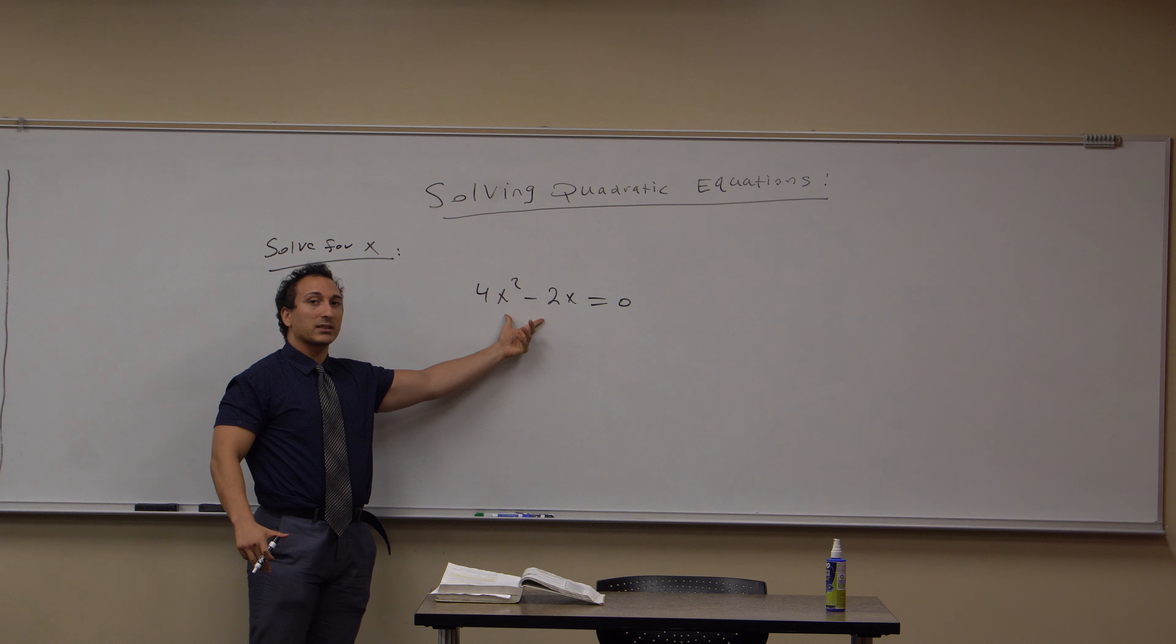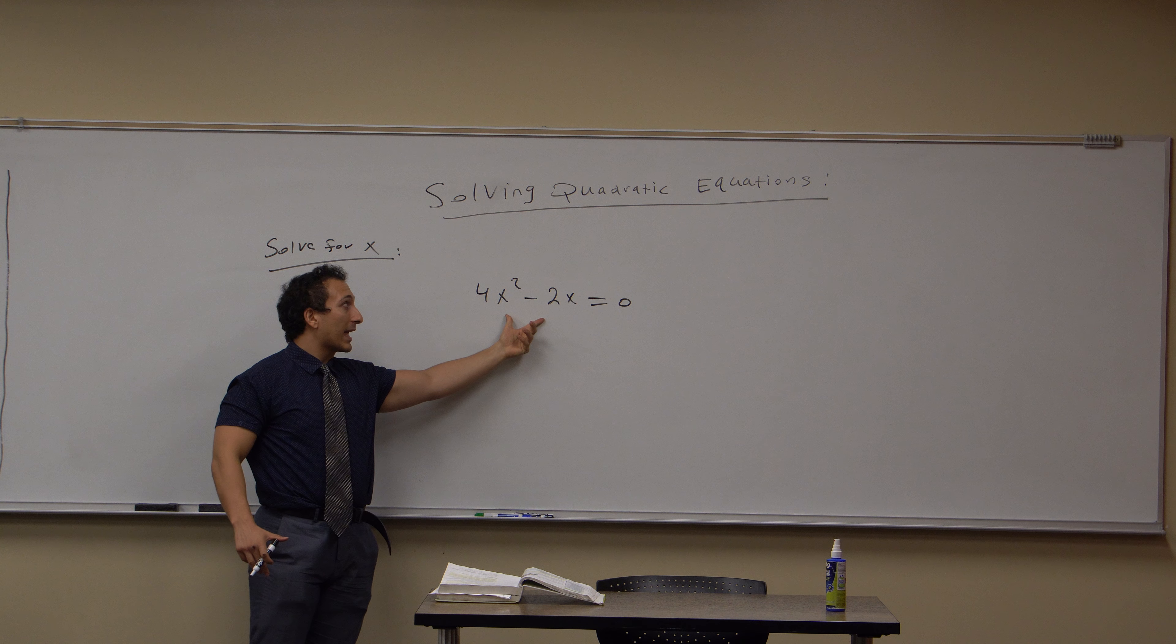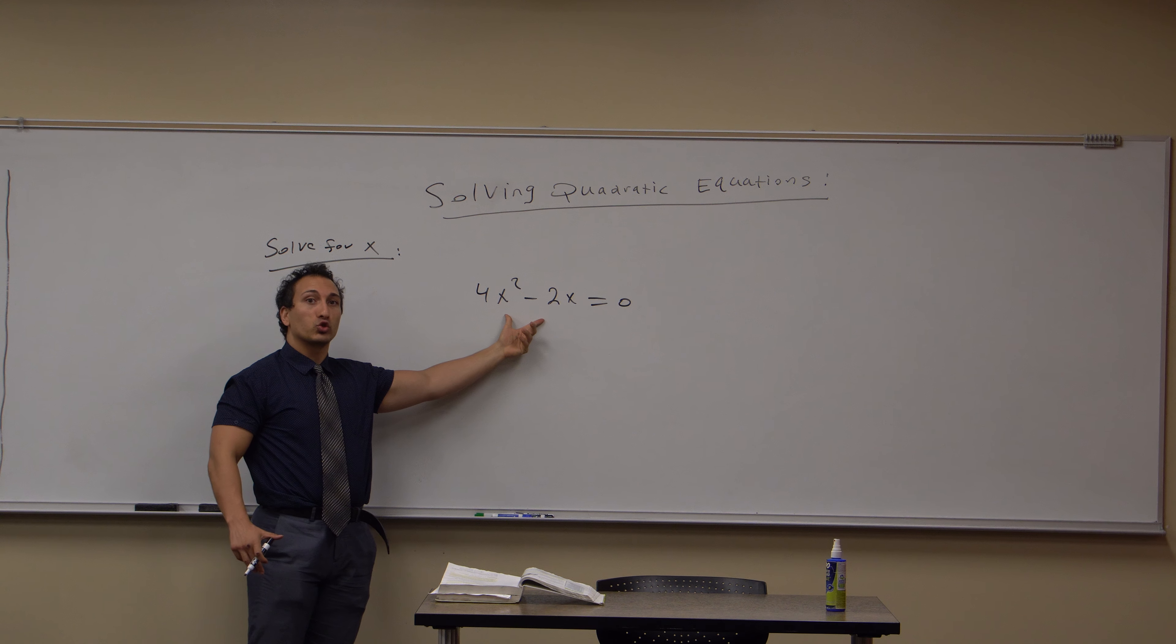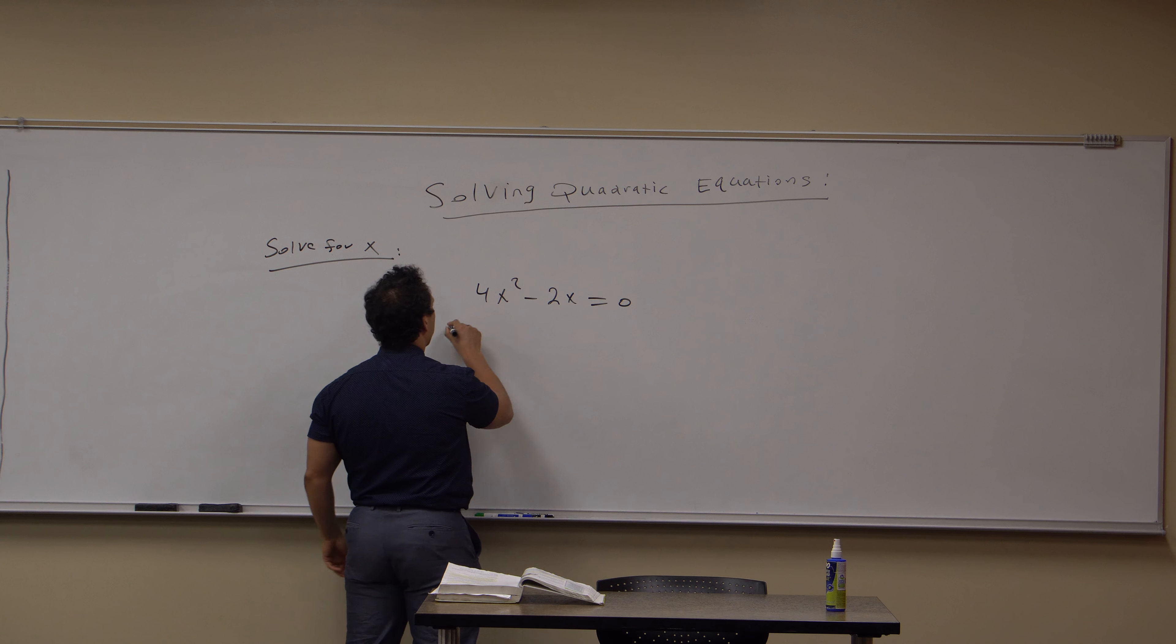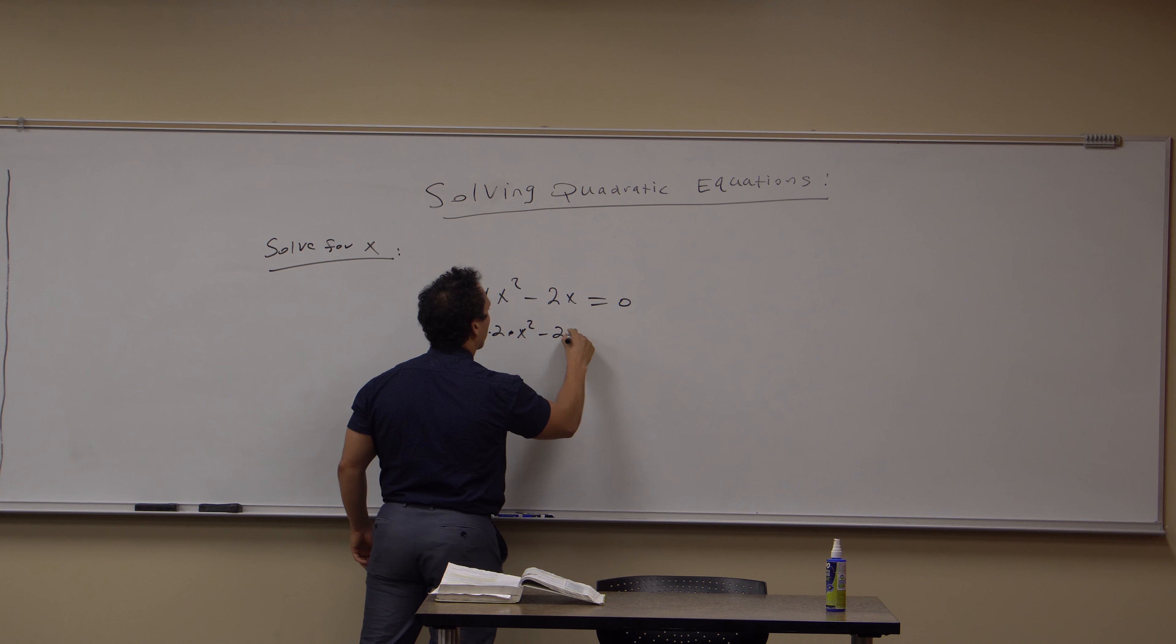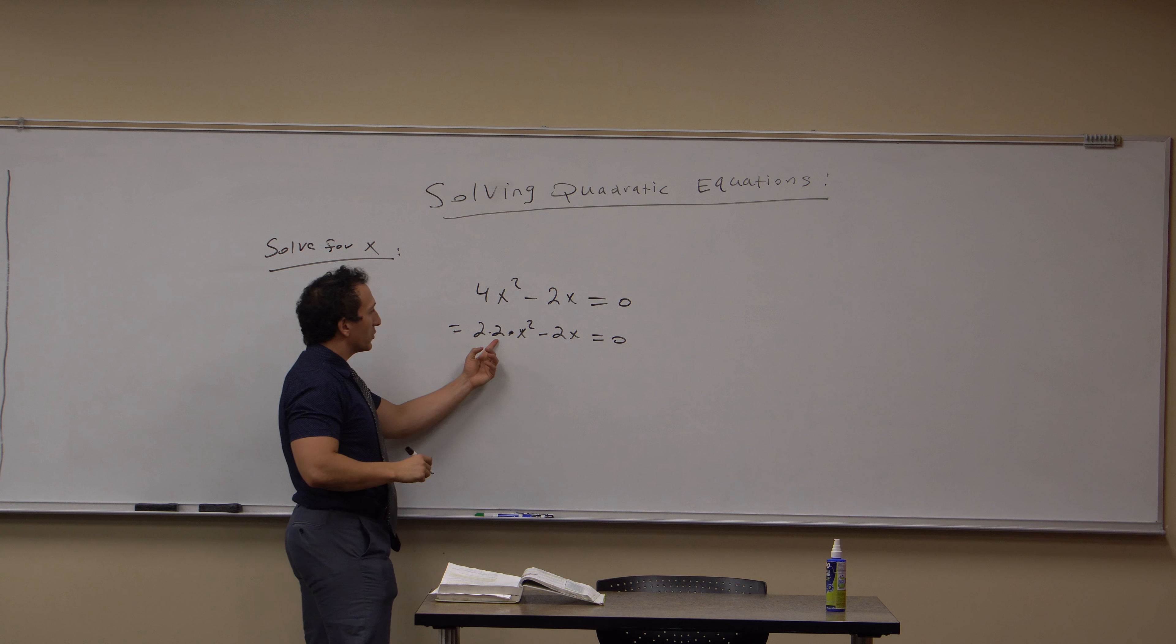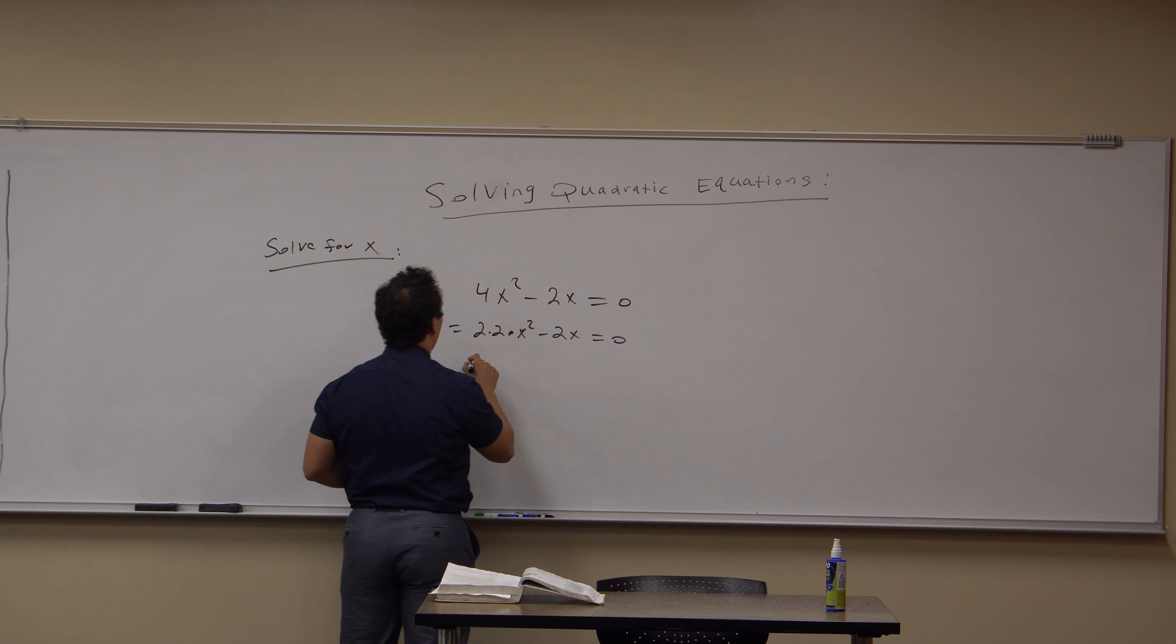Well, we can notice that there's actually two terms in this equation, and that they both share two entities in common: a 2, because 4 is really 2 times 2, and this 2 here and an x, because x² is really x times x.